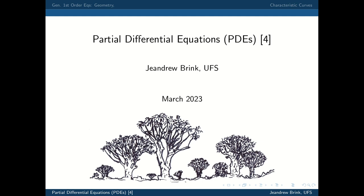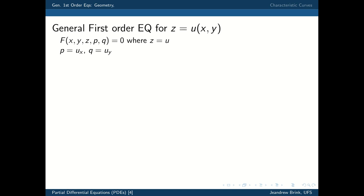We've done this already for the quasi-linear case, so what's happening in this lecture is a generalization of what's already been done, just slightly more involved. Let's look at the general first order equation for z, considered as a function of x and y. We can express it simply as a function of five variables: the independent variables x and y, the dependent variable z, which represents your solution surface, and the partial derivatives of z, namely ux which we denote p, and uy which we denote q. We assume that f has two continuous derivatives.